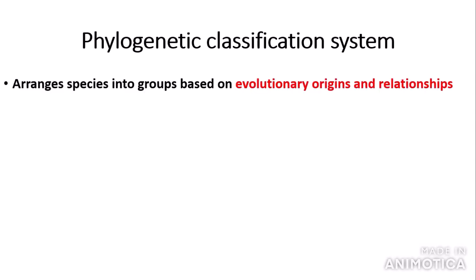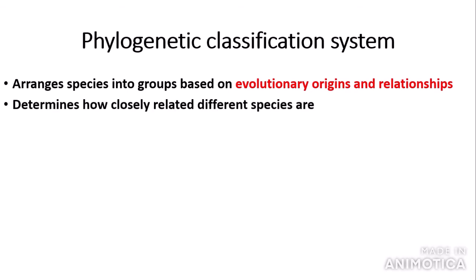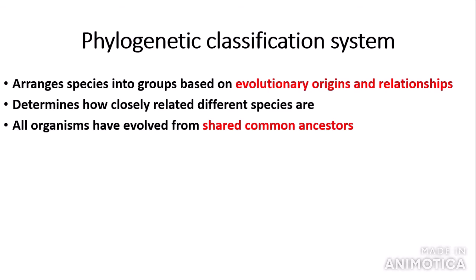So how are organisms classified? They are classified through the phylogenetic classification system. This system arranges different species into groups based on evolutionary origins and relationships, determines how closely related different species are, and is based on the principle that all organisms have evolved from a shared common ancestor — another word for a relative, if you like.